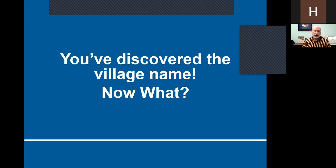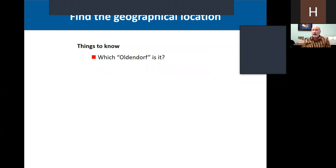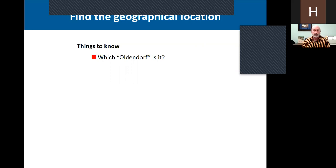So you've done all your homework and finally found that village of origin. So now what? Things to know: What is the exact name of the village? Sometimes when you find that out and look for where that village is, you discover that there are multiple villages with that exact same name. A typical example are villages called Oldendorf, Altendorf, Oldenburg, Neustadt, Altstadt — these terms just mean like 'old village' as opposed to the new village, or Neustadt just means 'new city' as opposed to the old city. These names are very common and pop up in many different places in Germany, so you're going to have to figure out which one it is.